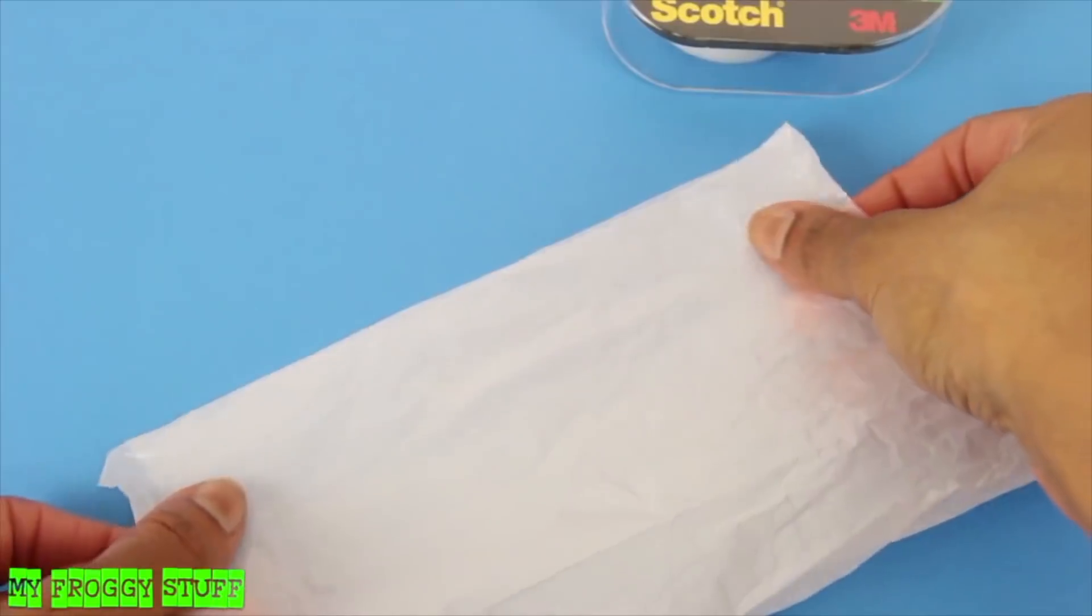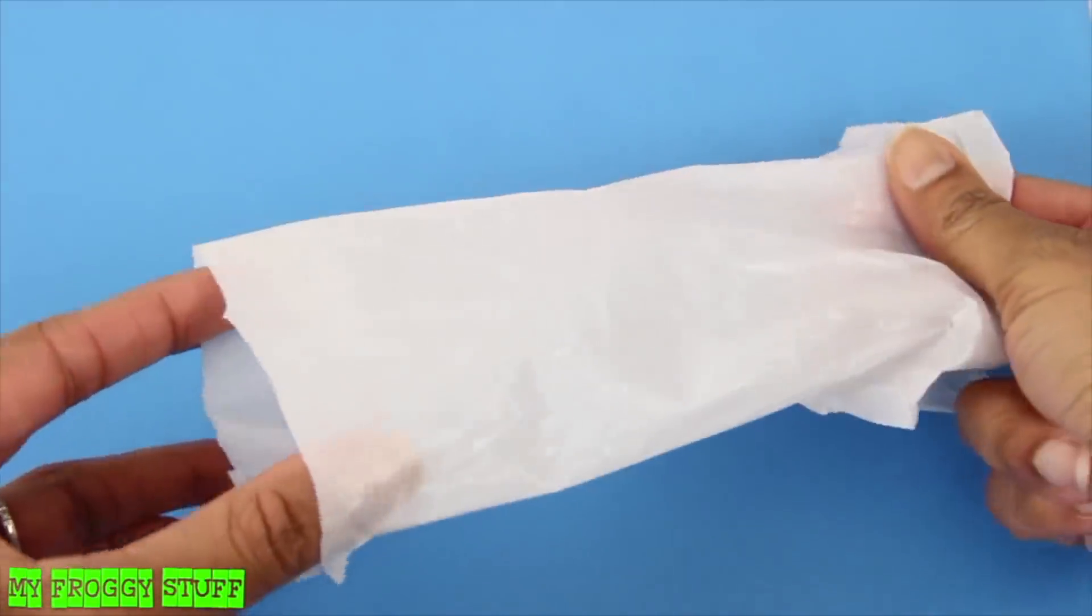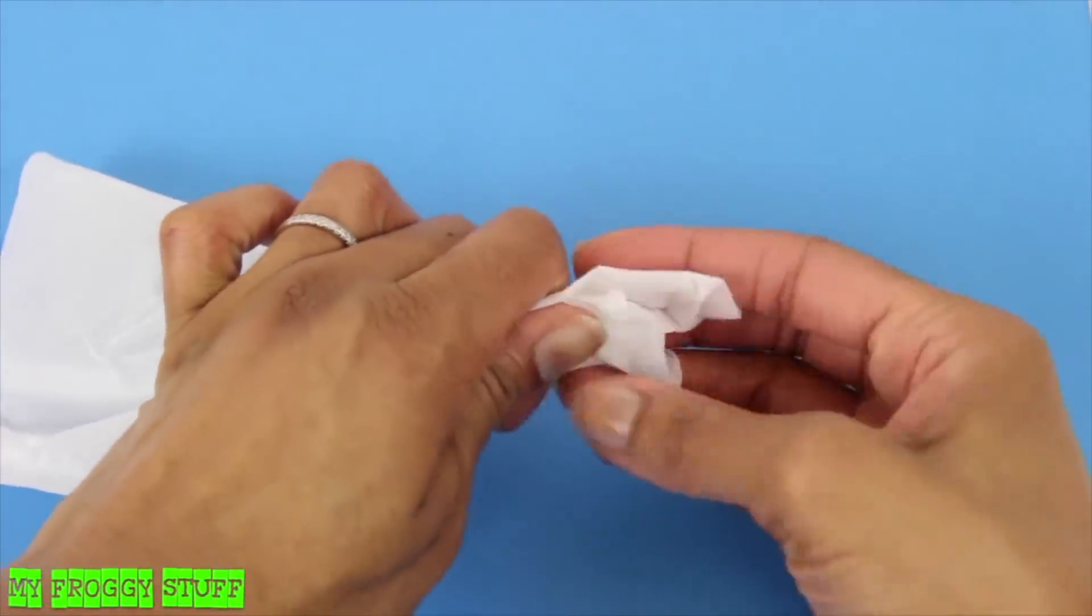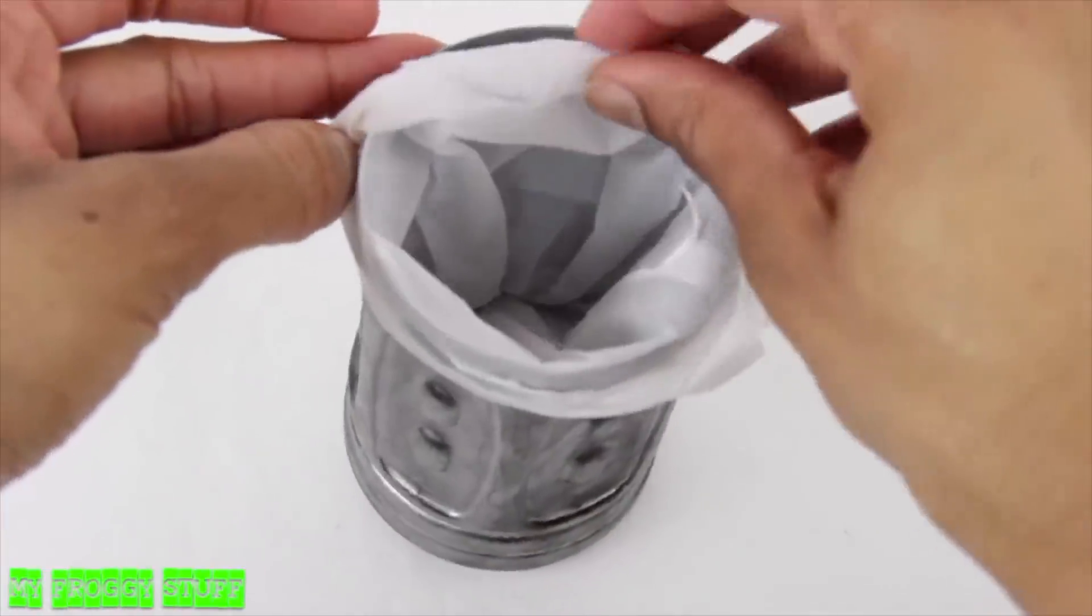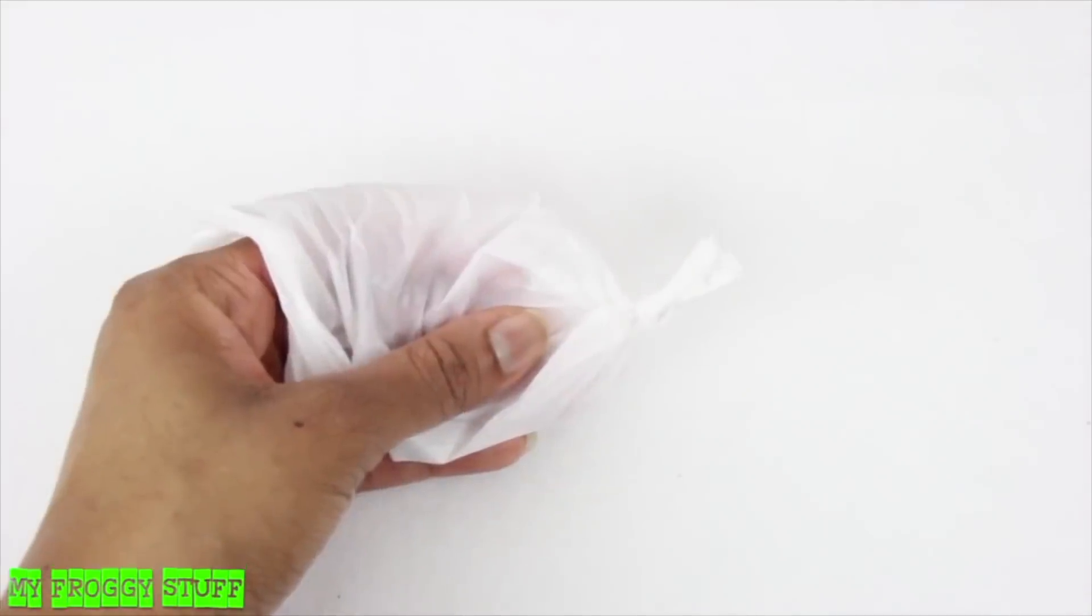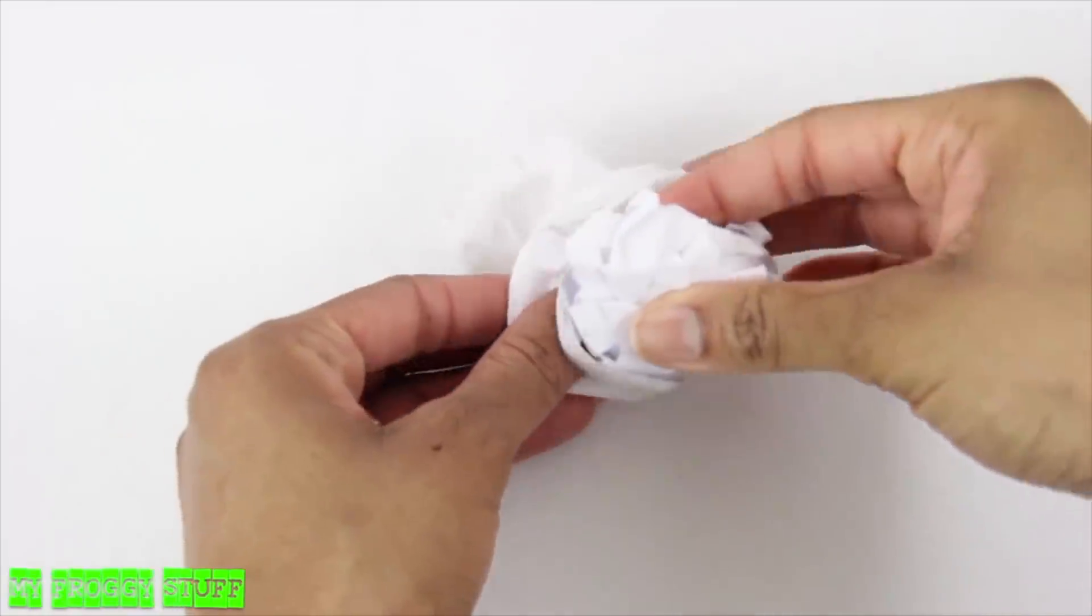Cut a rectangle out of a plastic bag. Fold it and tape the ends together to make a tube. Tie one of the ends closed. Then place it into the trash can to be the bag. Turn another bag inside out. Then stuff it with scraps of paper.